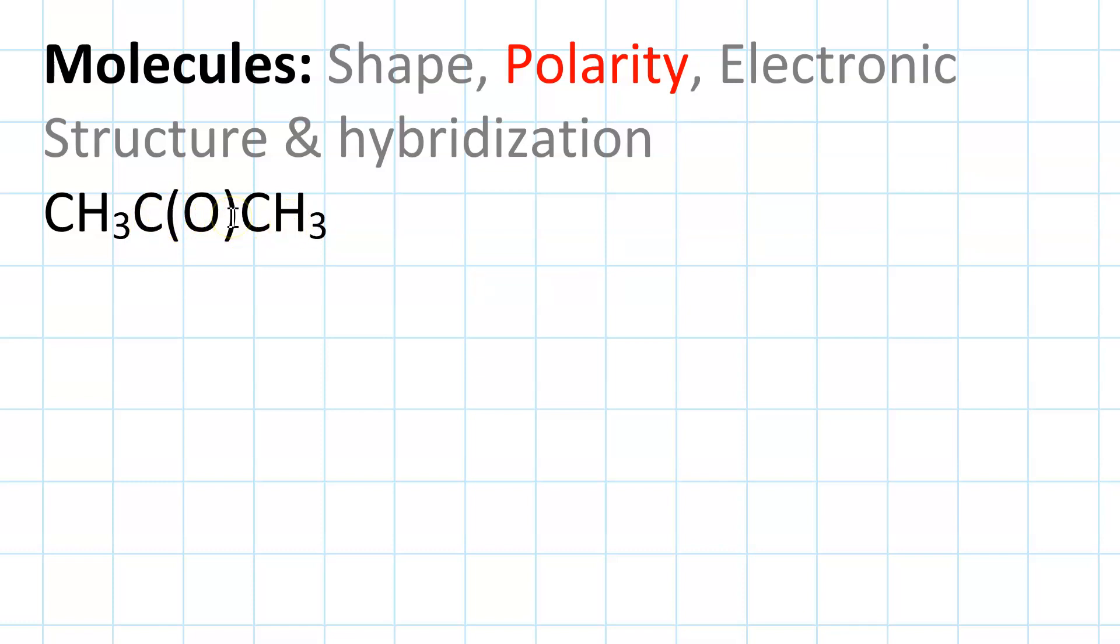The parentheses around the O mean it is a side chain and not a bridging group. So the Lewis structure for acetone looks like this.